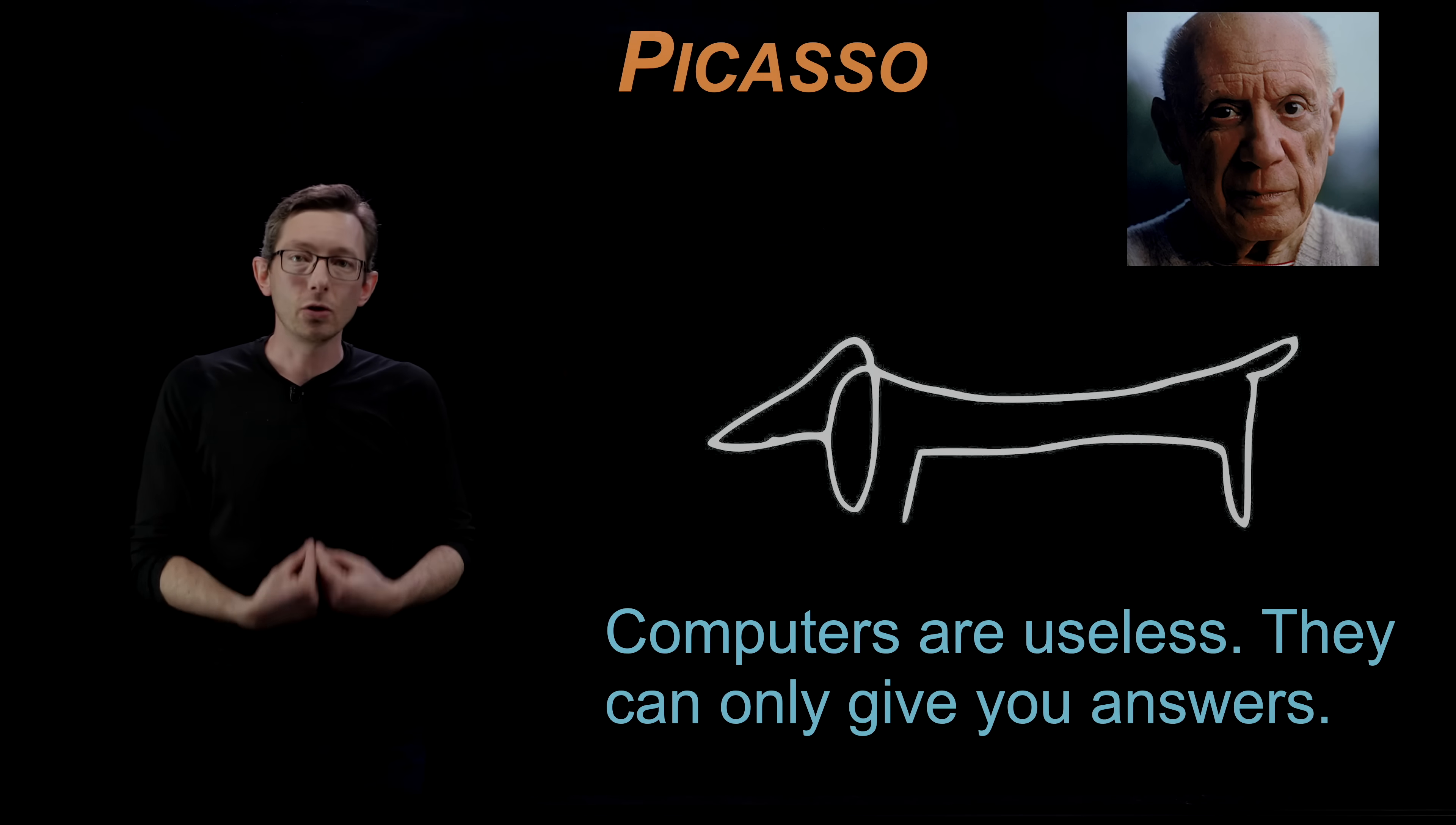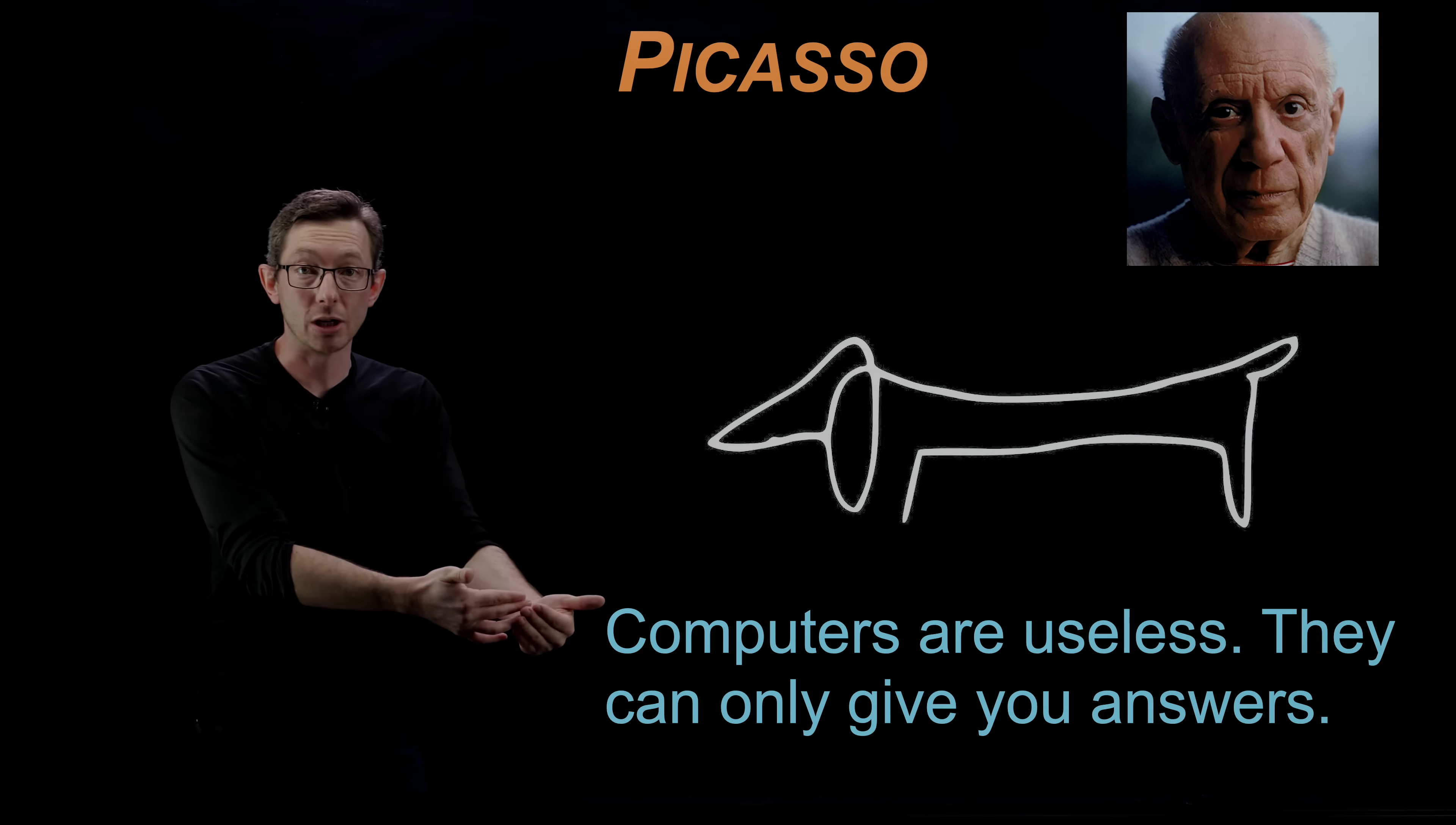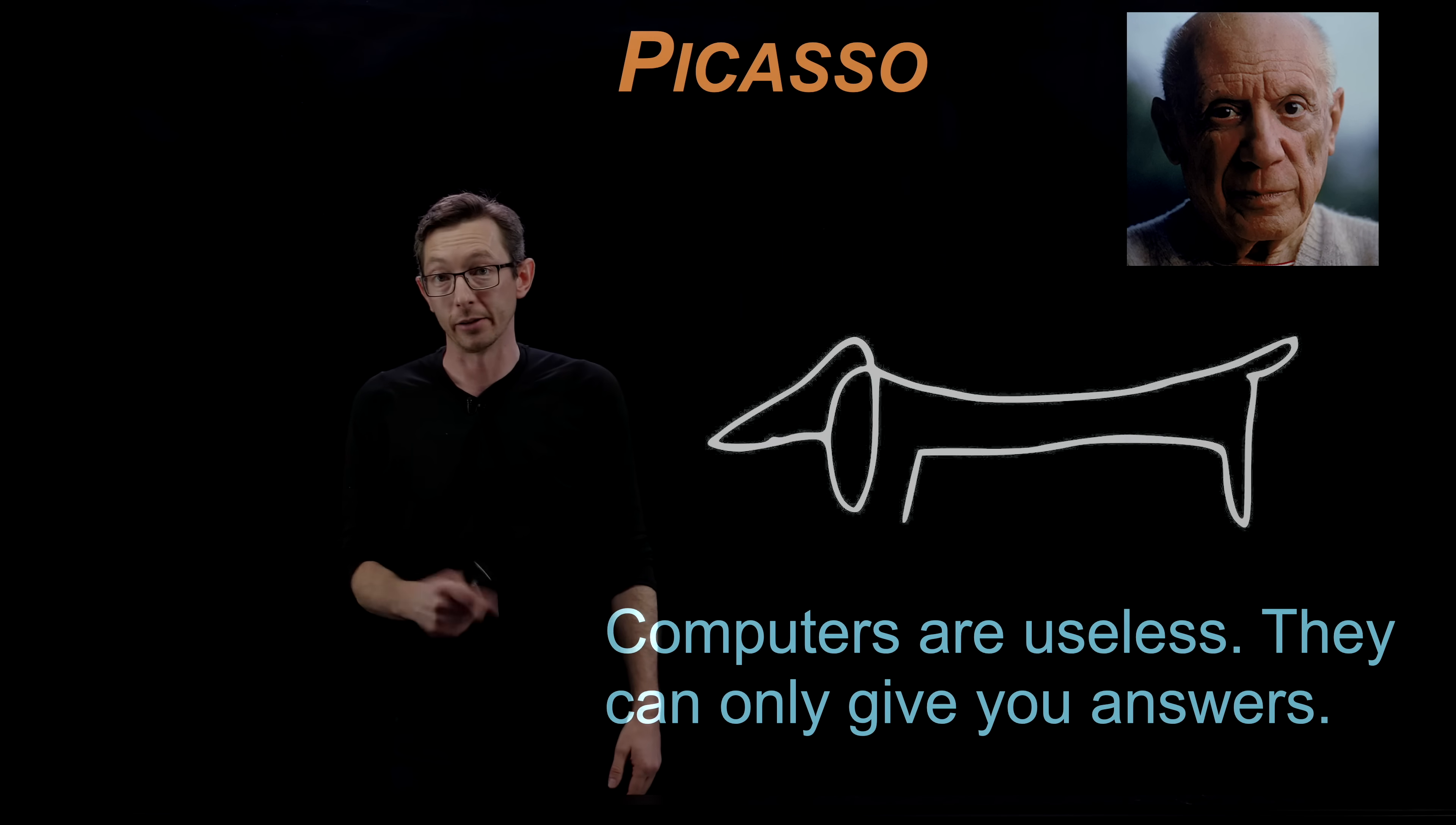There's still a lot of human expertise and human guidance in this procedure, in this process of building these machine learning models. You get to design the architecture. You get to design what the model is trying to achieve. You get to curate the training data and how the optimization is run. These are all human questions that have to be asked before you can get the machine to generate those answers for you.